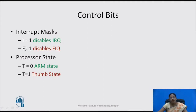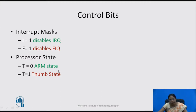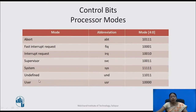Based on I and F, we can enable or disable the interrupts. Another bit in the control field is the processor state bit T, which stands for thumb. When T equals 0, it indicates the processor is in ARM state. When T equals 1, it indicates thumb state. There are 5 bits (bits 0 to 4) in the mode field indicating the different processor modes.